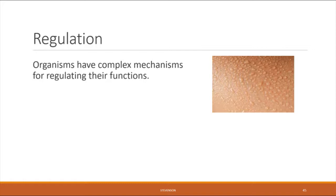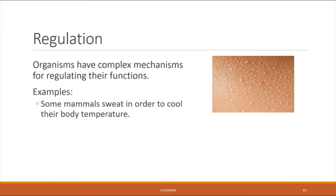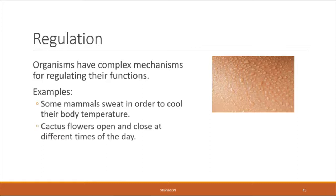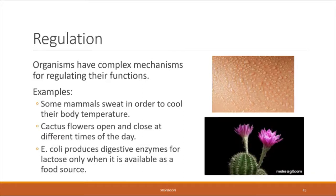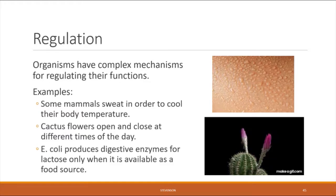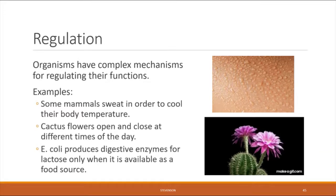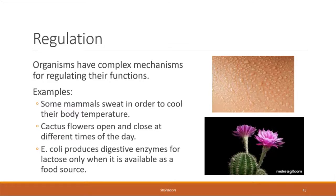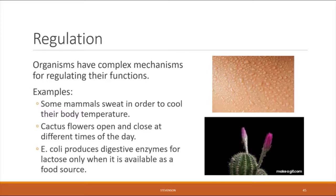Property five: regulation. Organisms have complex methods by which they regulate their various functions. For example, mammals including humans are able to sweat in order to regulate and cool their body temperature. Cactus flowers open and close at different times of the day. Even in the world of microbes — E. coli bacteria produce digestive enzymes for the milk sugar lactose only when lactose is present and available as a food source. When there is no lactose, they don't make those enzymes, regulating themselves accordingly.